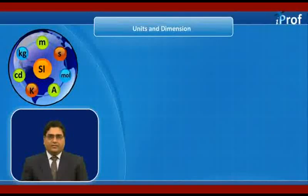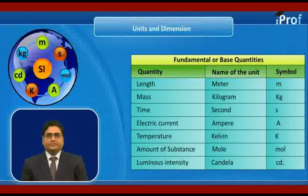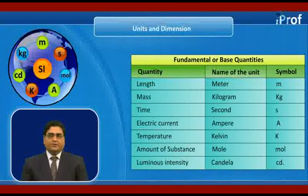Let us see a table of fundamental or base quantities: quantity, name of the unit, and symbol. Length: meter, small m. Mass: kilogram, small k, small g. Time: second, small s. Electric current: ampere, capital A. Temperature: Kelvin, capital K. Amount of substance: mol, small m, small o, small l. Luminous intensity: candela, small c, small d.